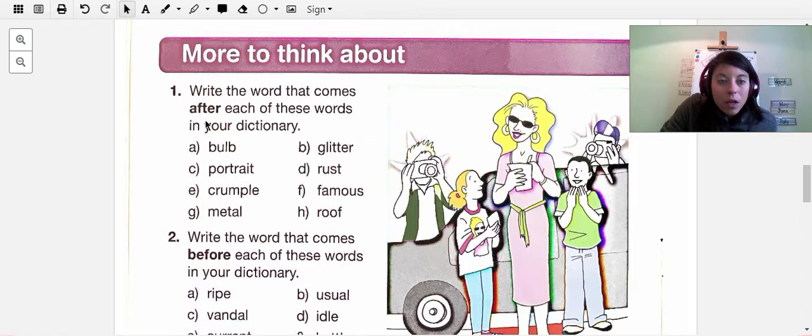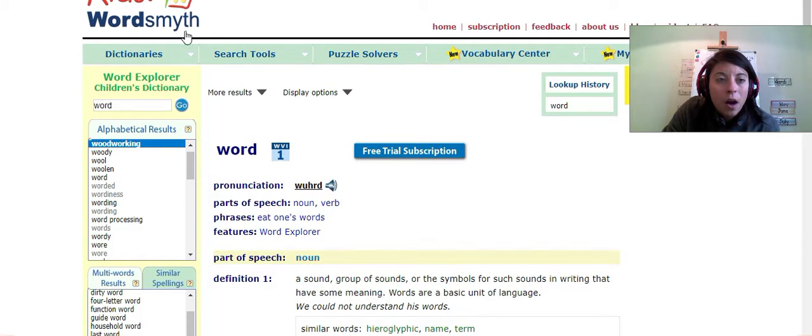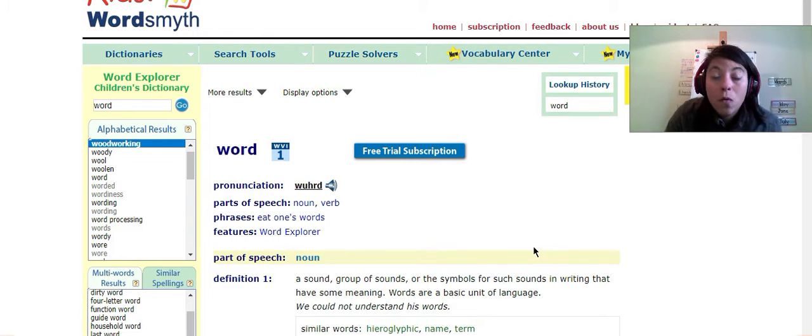Now, write the word that comes after each of these words in your dictionary. Now I know that you might not have a dictionary. If you have a physical dictionary, that's fine. But if you don't, that's okay too. I'm going to show you what you're going to do. You're going to go to this website that is called kids.wordsmith.net. You have the link already. It's already put in the information for this class.